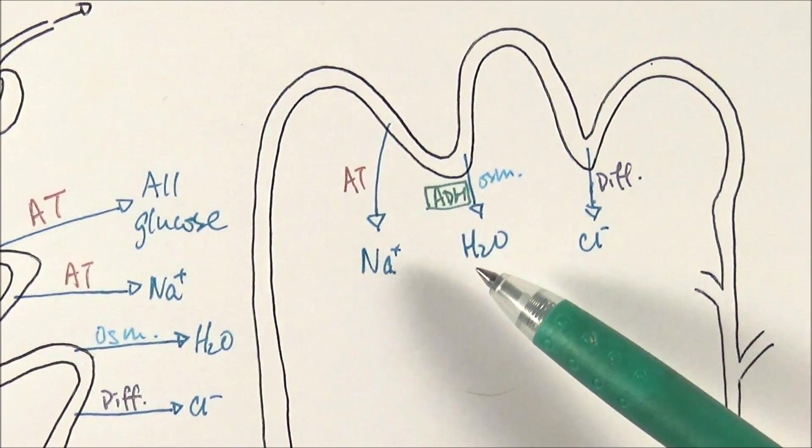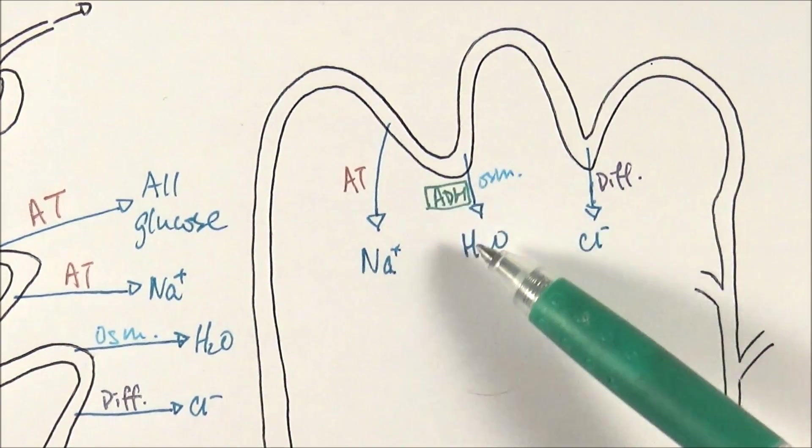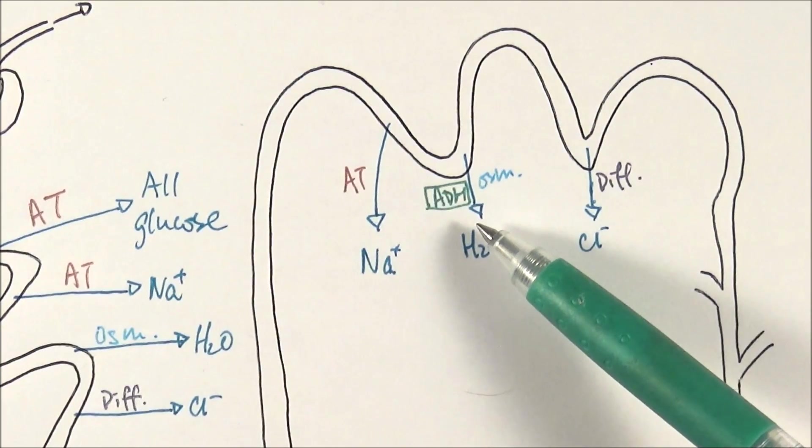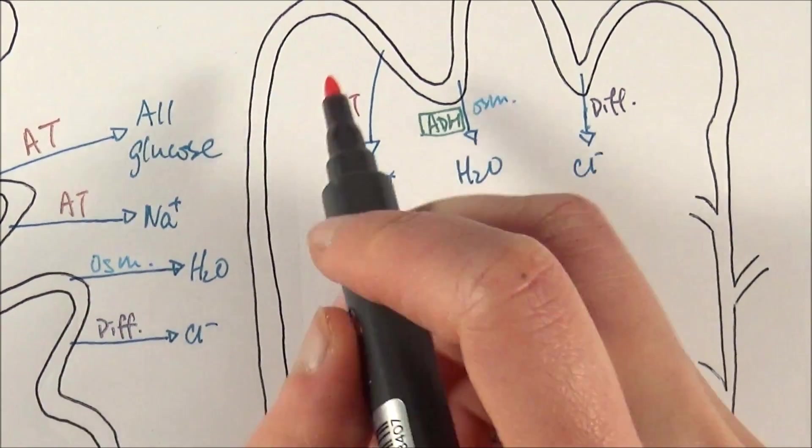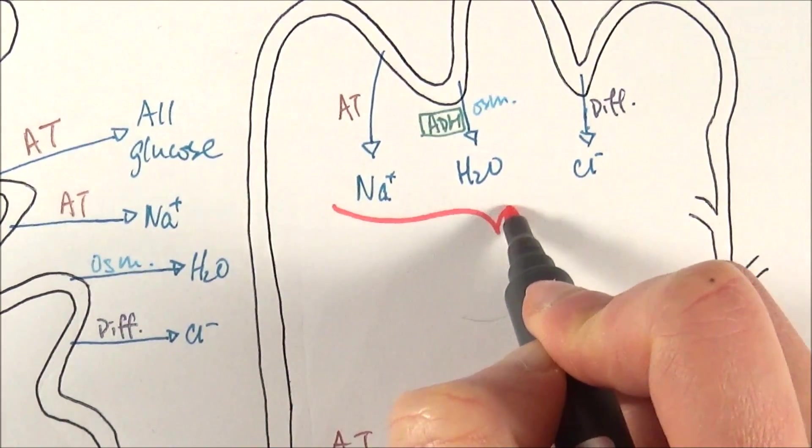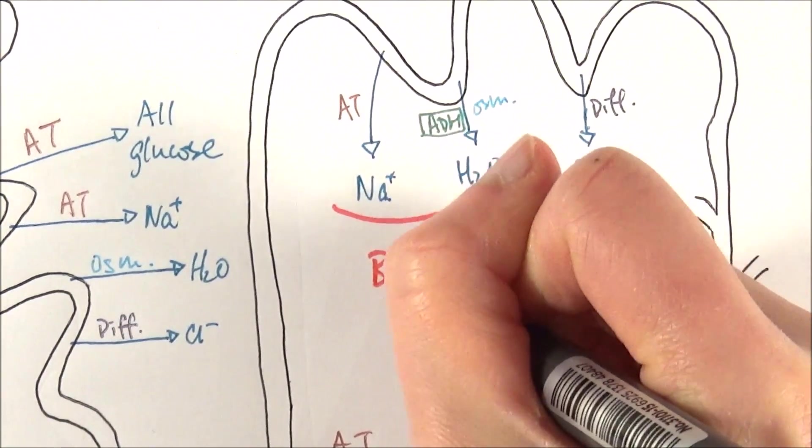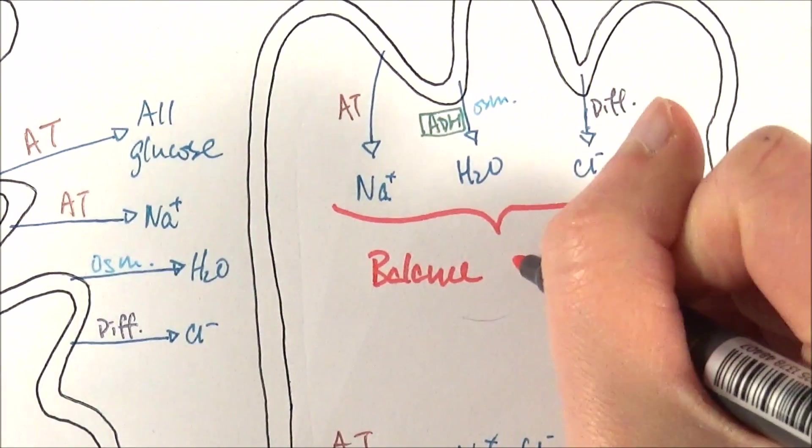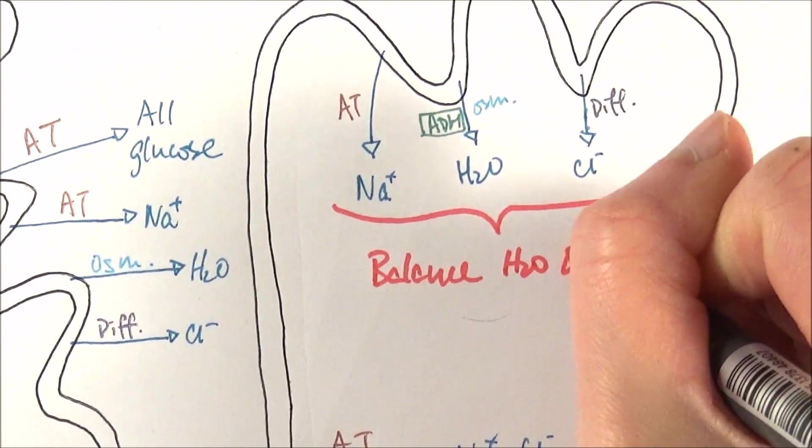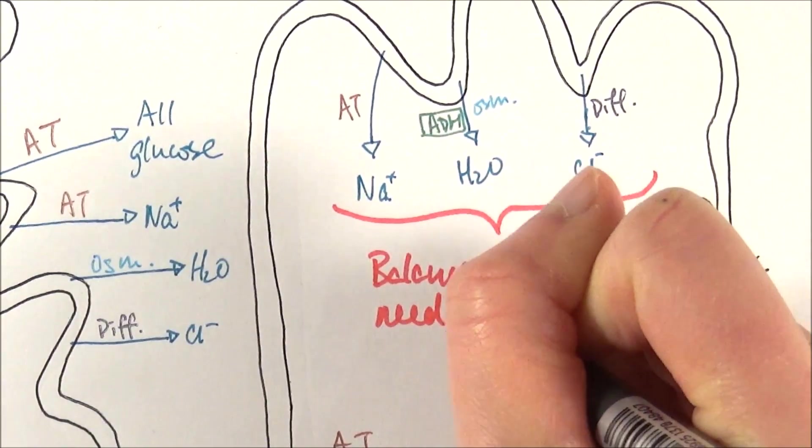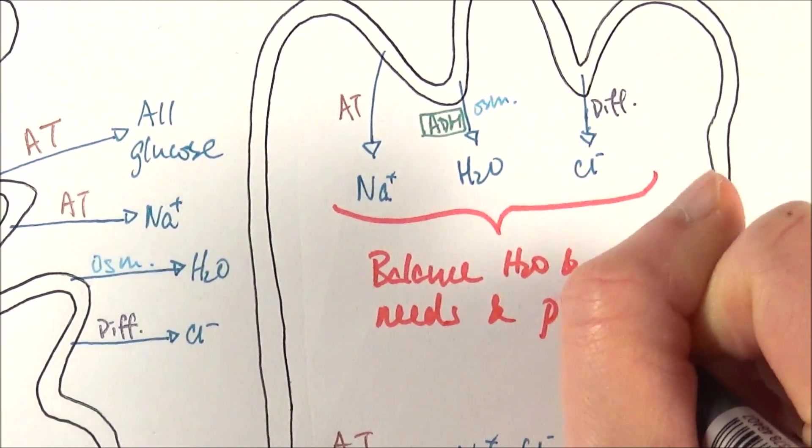Water as well, if the body is dehydrated, we will reabsorb more of them by the action of antidiuretic hormone. As I said, it only reabsorbs it if it needs it and the whole point is to balance some of the things in the body. So specifically, it balances the water and salt needs depending if the body needs it and also the pH of the blood.